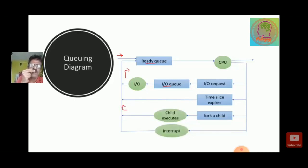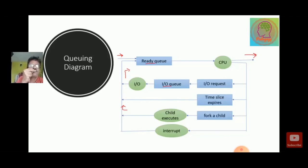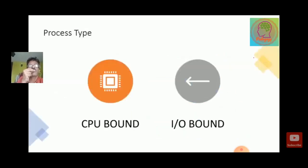If a student has any questions regarding this queuing diagram, he or she may write in the chat box or call for detailed explanations or queries. Please be very careful about this queue. Now, a process may be of two types: one is CPU bound and another is IO bound.